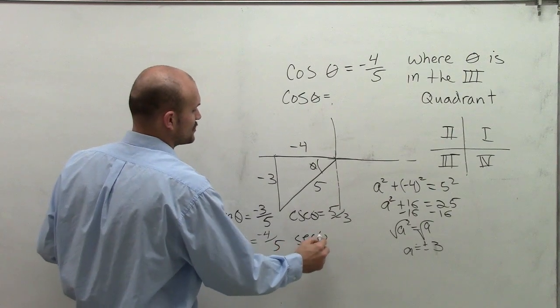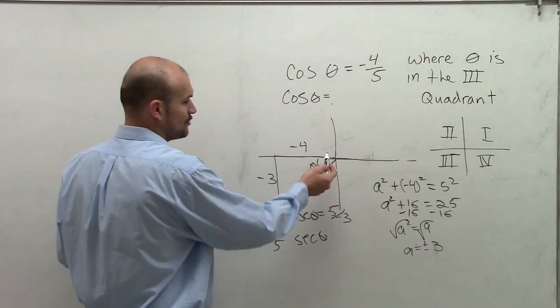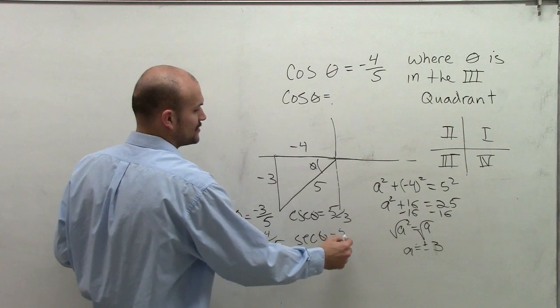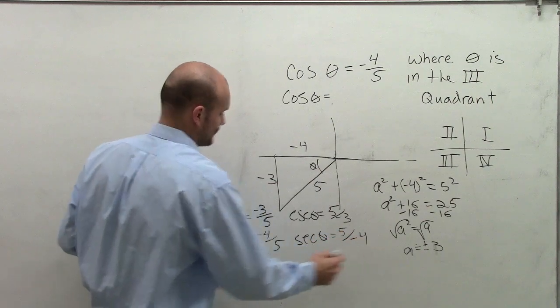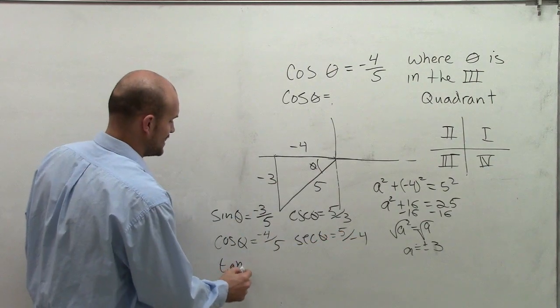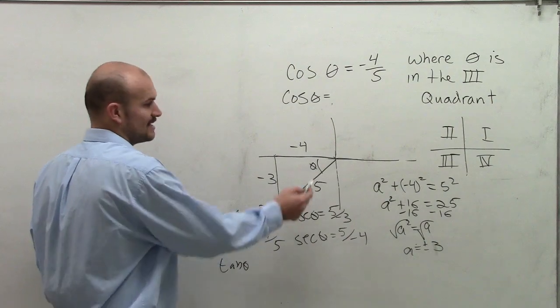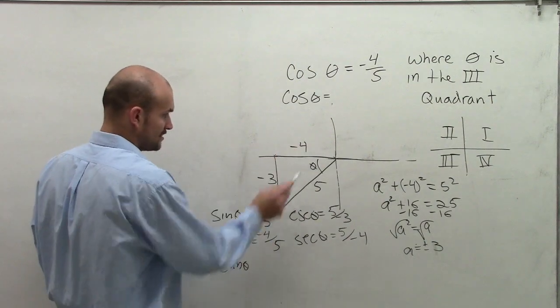And the secant, which is the reciprocal of that function, is going to be now the hypotenuse over the adjacent side, 5 over negative 4.